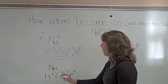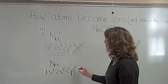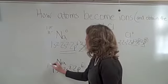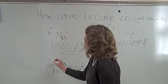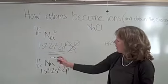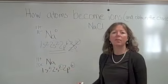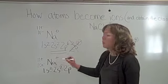if you count up these numbers of electrons, we now have 10 electrons. We have 11 protons still. And a positive 11 and a negative 10 end up giving us a plus 1 charge.